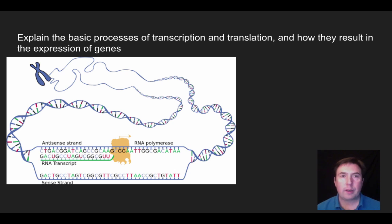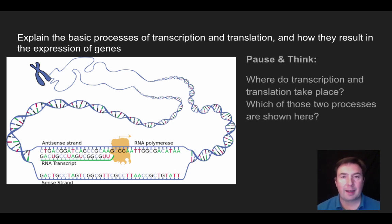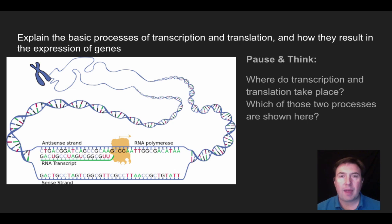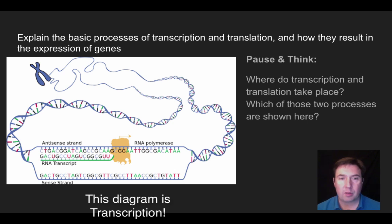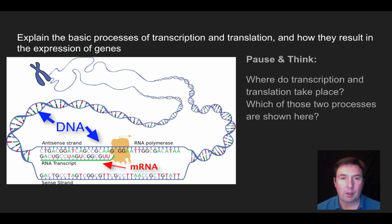In this image, we're going to talk about the basic process of transcription and translation and how they relate to gene expression. Before we start, pause and think about these two questions: where do transcription and translation take place, and which of those processes are shown here? Transcription is the making of mRNA from DNA by RNA polymerase, and that takes place within the nucleus because DNA never leaves the nucleus. Translation takes place at ribosomes out in the cytoplasm where the mRNA has left the nucleus and associated with a ribosome. This diagram shows transcription — we can see an RNA transcript, that would be an mRNA, being made from DNA using RNA polymerase.